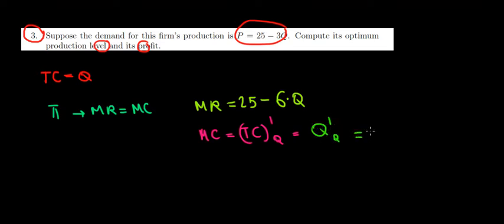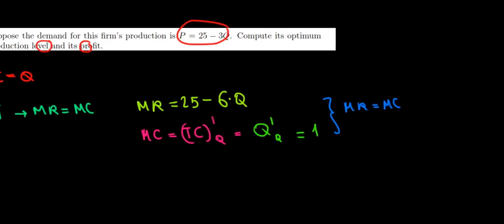Now we can calculate the optimal quantity by setting marginal revenue equal to marginal cost: 25 - 6Q = 1. Solving this, 25 - 1 = 24 = 6Q, which gives us an equilibrium quantity of 4 units. So Q* = 4.